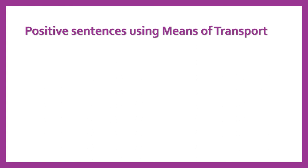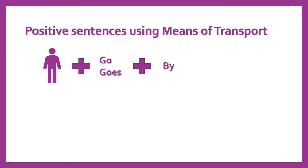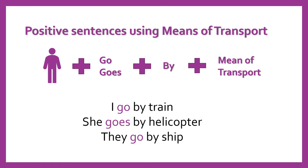Now we're going to learn how to create these positive sentences using means of transport. First of all, we're going to use any personal pronoun. Next, we're going to use the verb go or goes, depending on the pronoun. Next, the word 'by', that means 'por' or 'en'. And finally, any means of transport. For example, we can say: I go by train. Yo voy en tren.